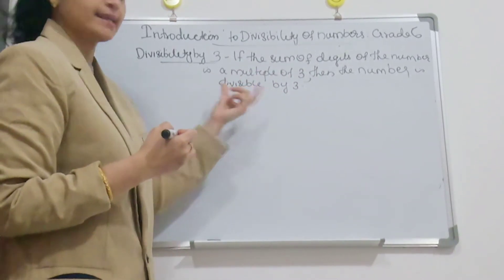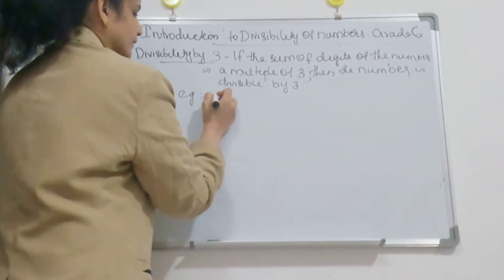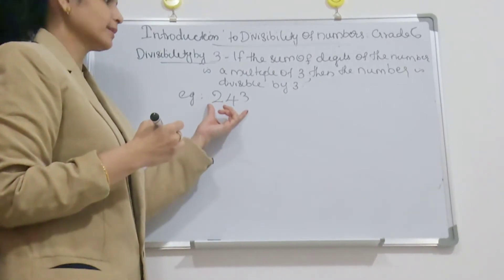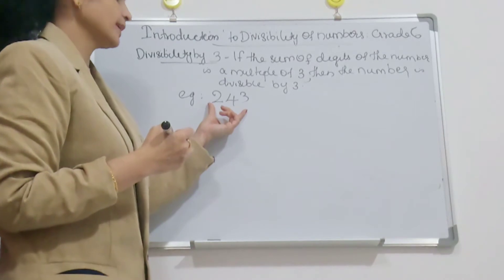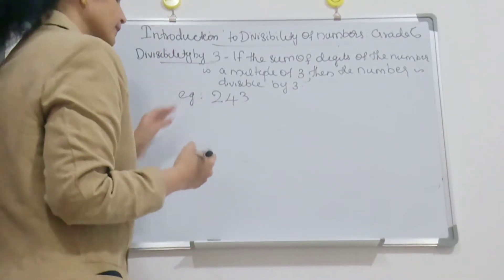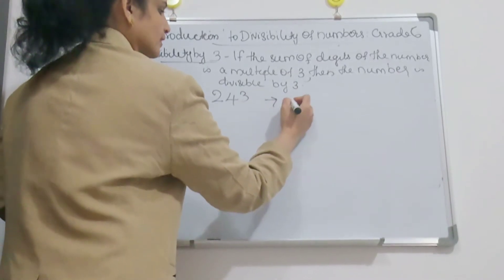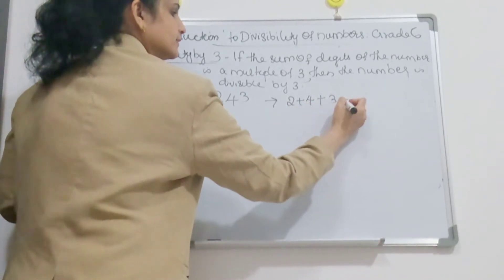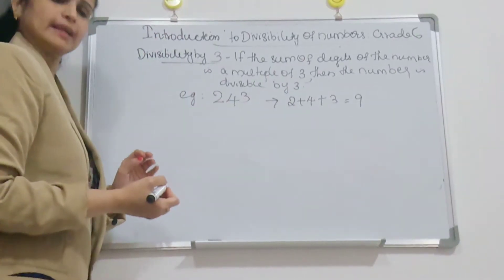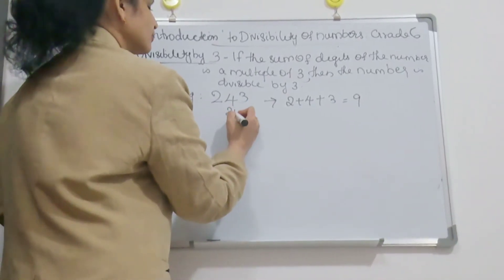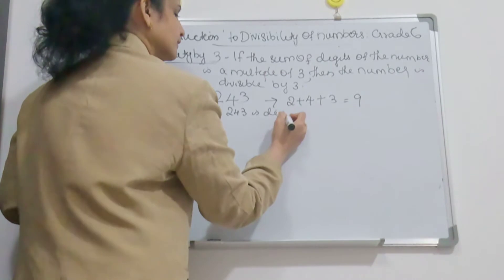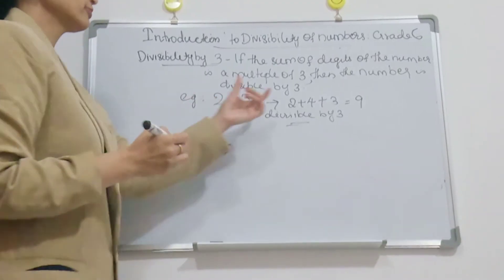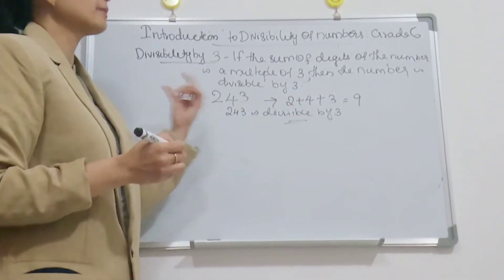I will explain this by an example. Example: 243. You have to check whether this number is divisible by 3. What you will do — you add the digits: 2 plus 4 plus 3. 2 plus 4 is 6, 6 plus 3 is 9. Is 9 a multiple of 3? Yes. So 243 is divisible by 3.